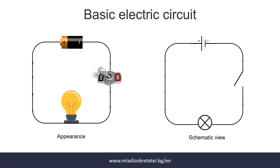In the previous tutorial we discussed electricity basics and the simplest electric circuit. Today we will upgrade our circuit by adding a toggle switch, so we can turn on and off our light bulb just like you do at home with the wall switch. But what actually happens?